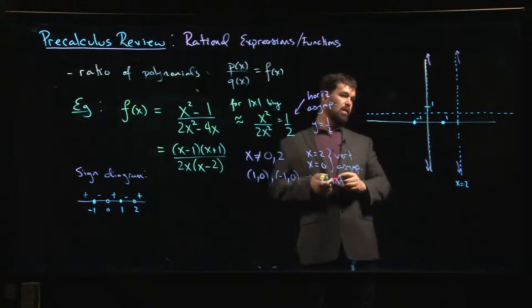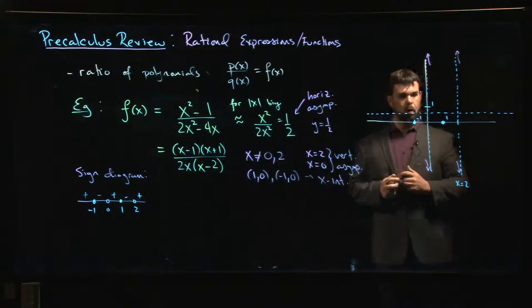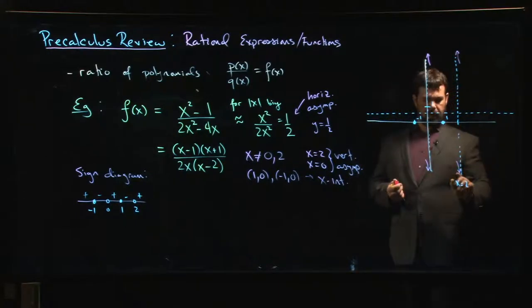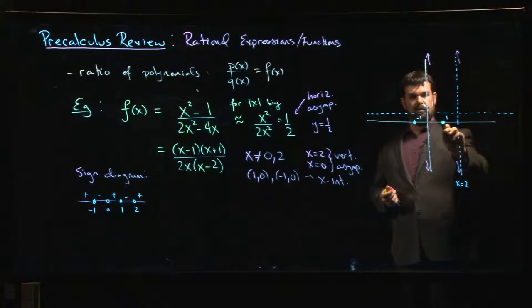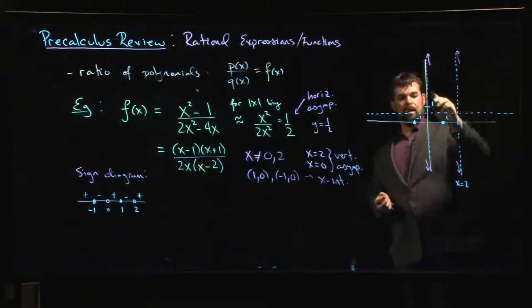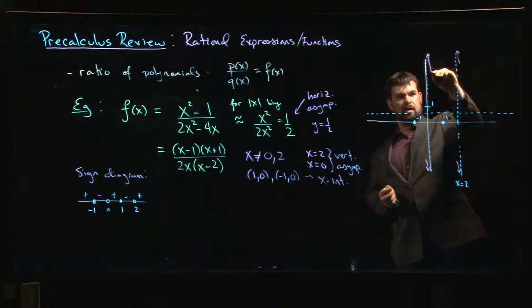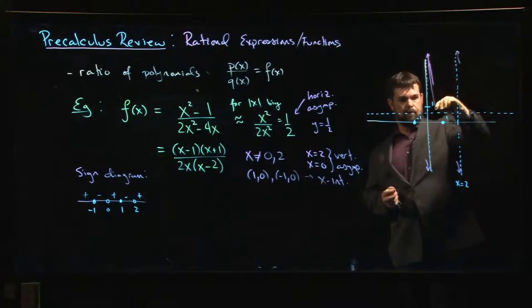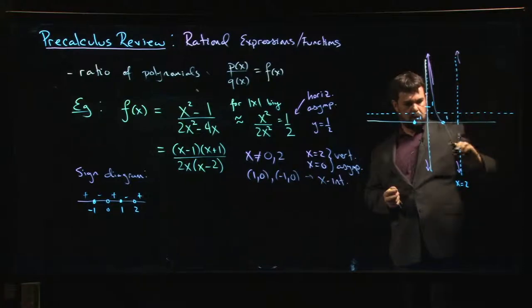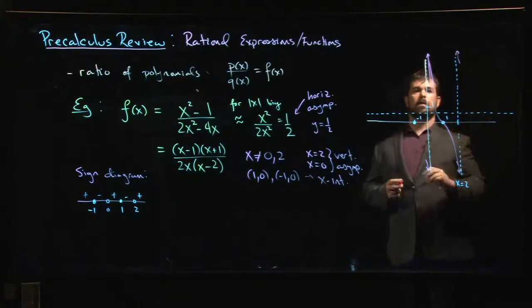But we have this bit of information here. What we know is that we have to kind of head down to that vertical asymptote there, we have to pass through one, we have to head up there. So it seems like the most likely scenario is going to be something like that.